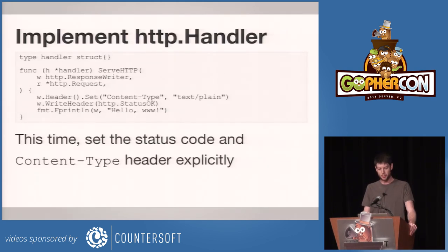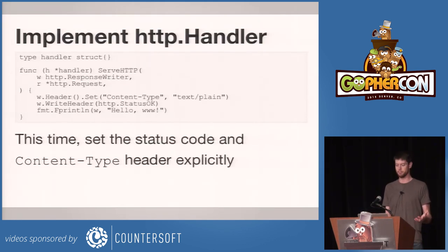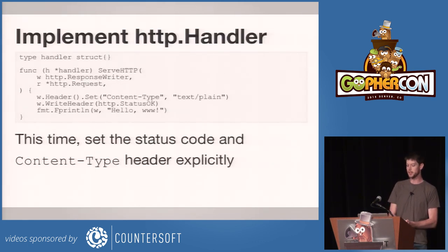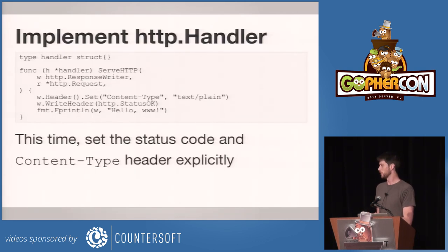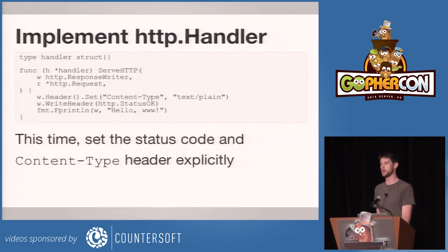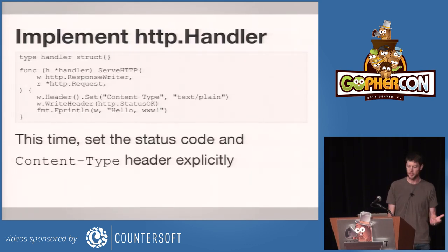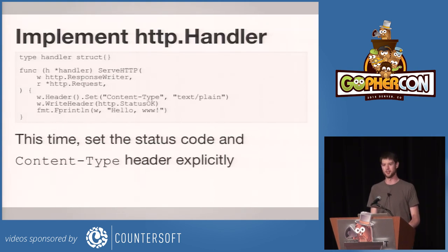So I named a type. It's an empty type, it's a boring type. And I defined the ServeHTTP method with the same basic structure as we had before. I've added a couple of things just to show the full extent of the interface. We set the content type header — this is plain text, so it's text/plain. And we're explicitly responding 200 now. We're still saying hello www.